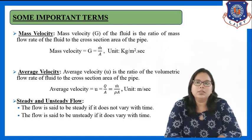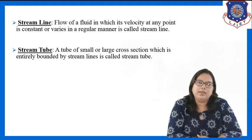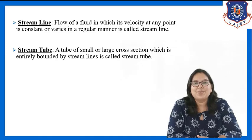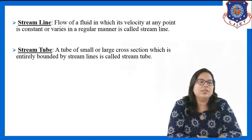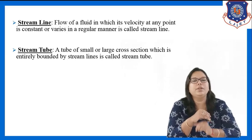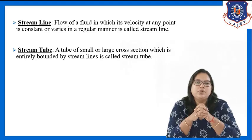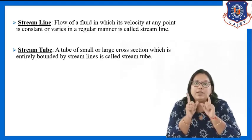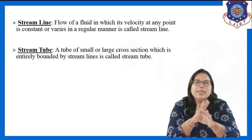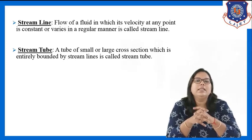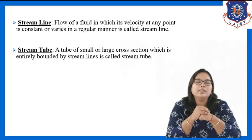Next term is streamline. We will study streamline in the context of Reynolds number — streamline or laminar flow, where there are no eddies or circulatory motion. Flow of a fluid in which velocity at any point is constant, or if it varies, it varies in a regular manner, is called streamline flow.